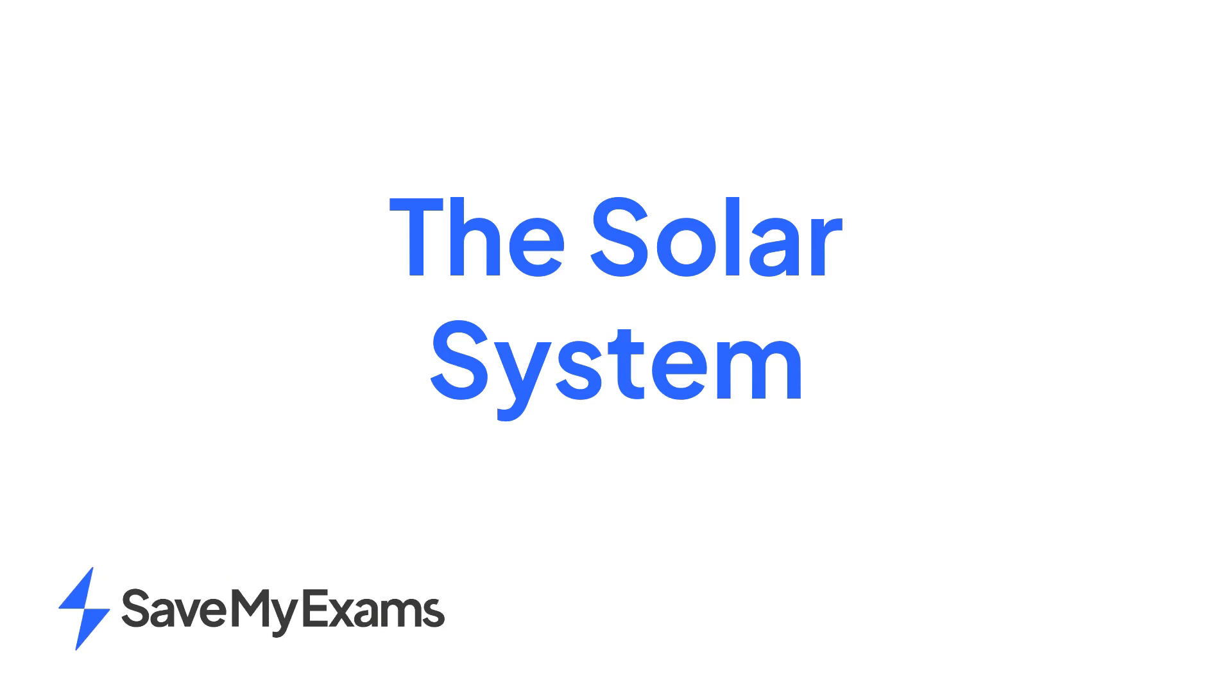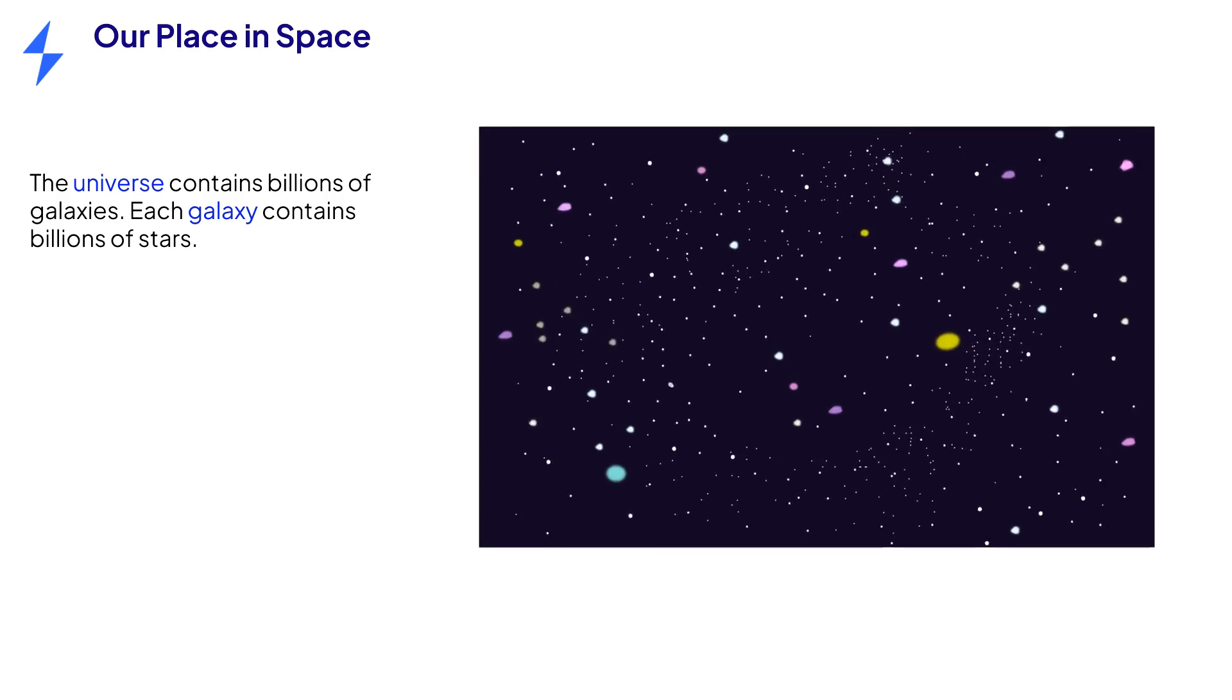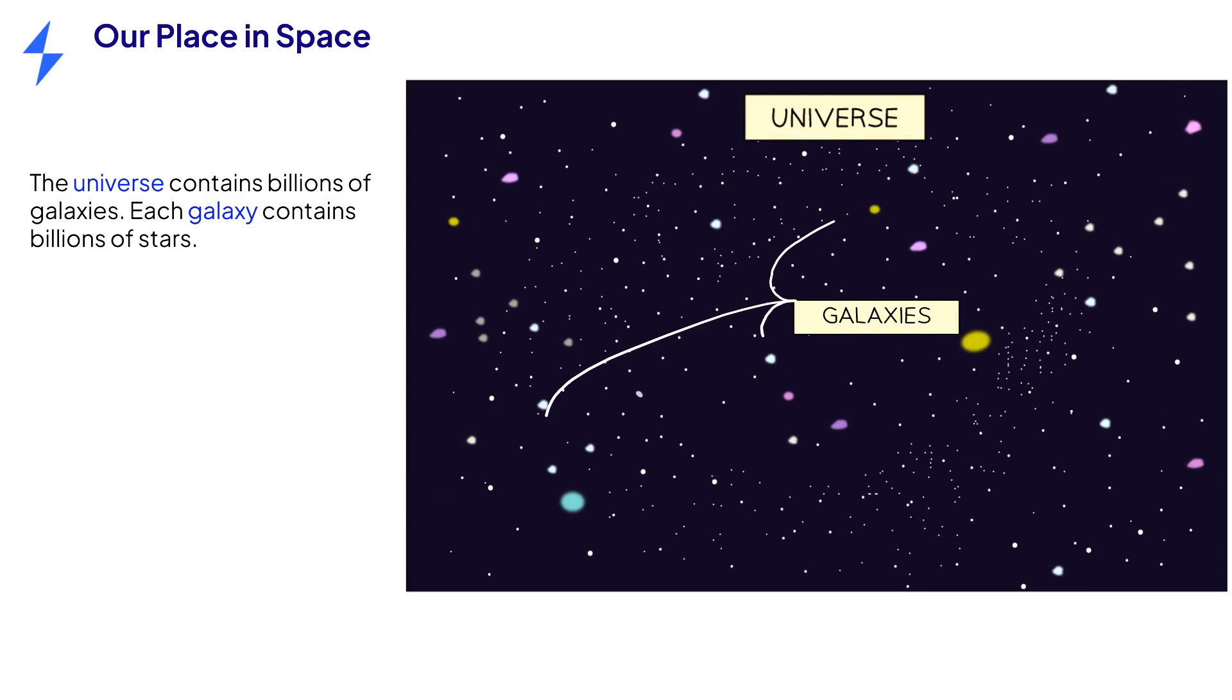In this video we will be looking at the solar system and all of the objects in it. We live in a universe made up of hundreds of billions of galaxies. In this image of the sky, each dot you can see is a galaxy, not a star.